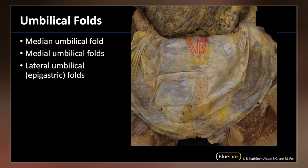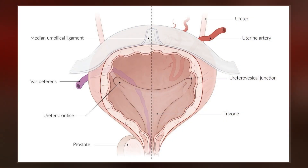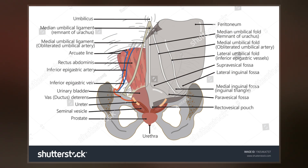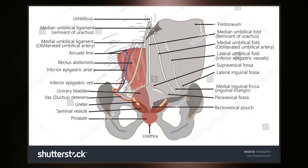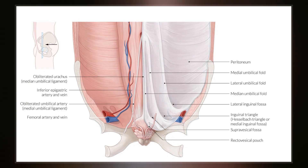Lateral to this structure are the medial umbilical ligament and the lateral umbilical ligament. The median umbilical ligament begins as the allantois in the embryonic period, then becomes the urachus in the fetus. This later develops into the median umbilical ligament at birth. It is also formed from the cloaca in utero.